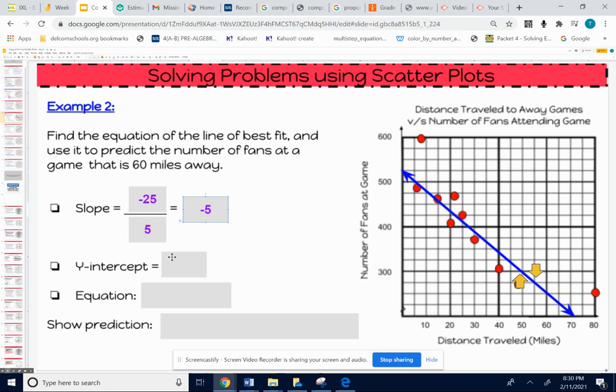The y-intercept is where the line crosses the y-axis. Here's 500 - it's one space above, it must be 525. The y-intercept is 525. The equation of a line: y equals slope x plus y-intercept. So y equals the slope (negative 5) x plus the y-intercept of 525. There's our equation.